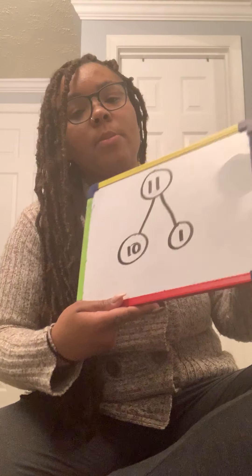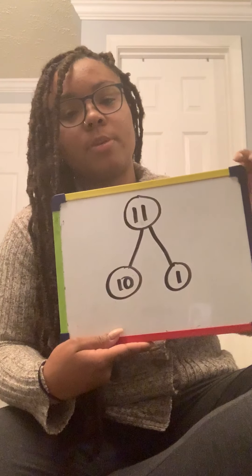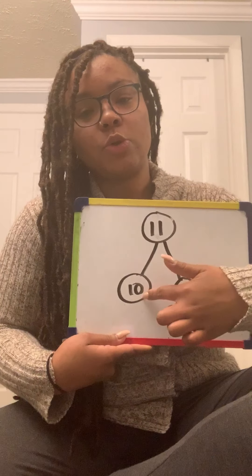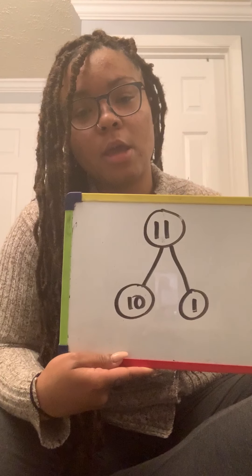So, those are the numbers we're going to be focusing on — the numbers between 10 and 20. A number bond, as we know, consists of a whole and two parts, just like so. In this number bond, this would be the whole, and these are the two parts.